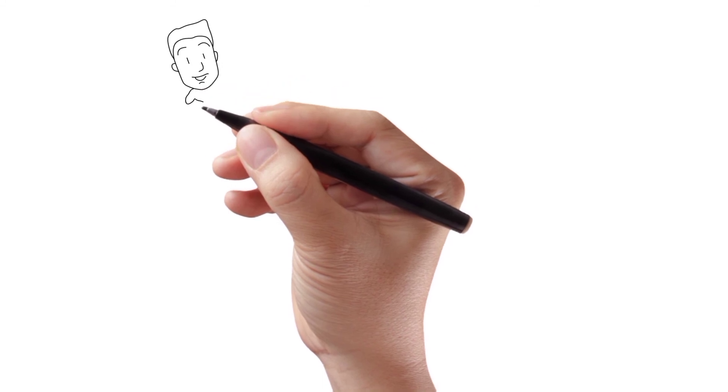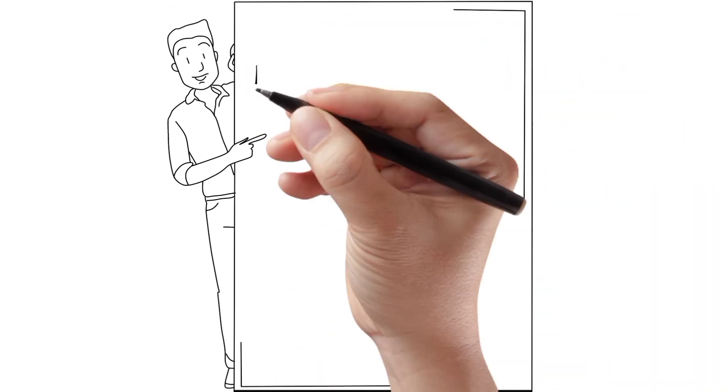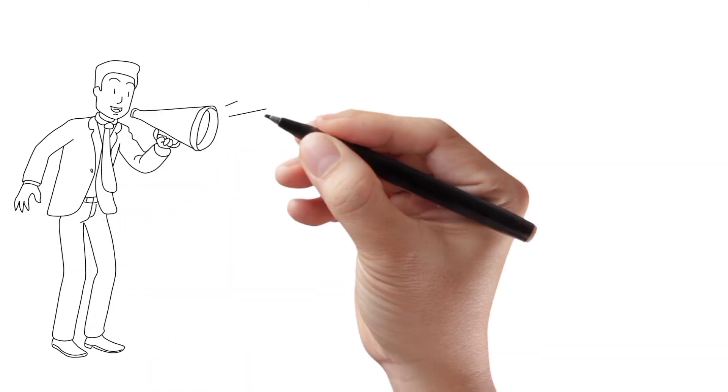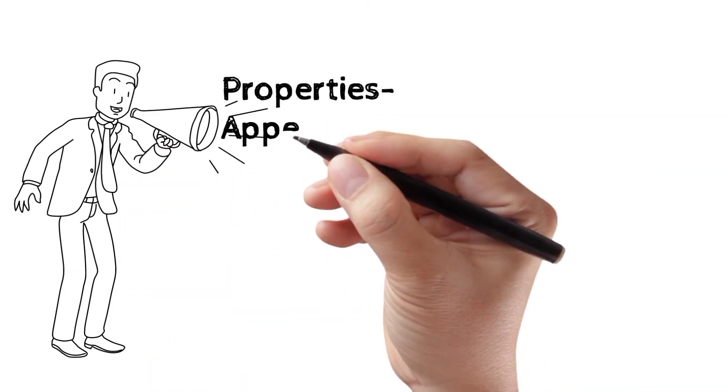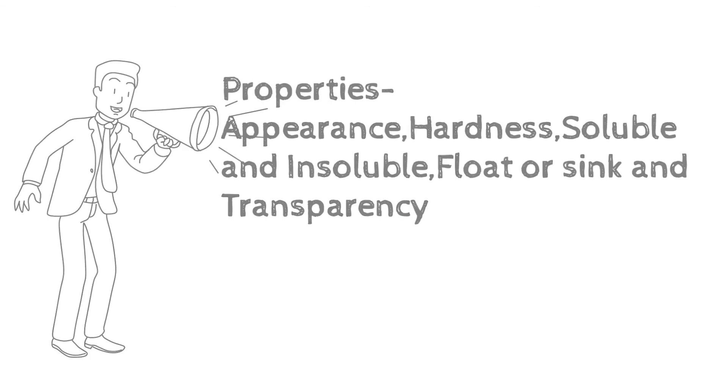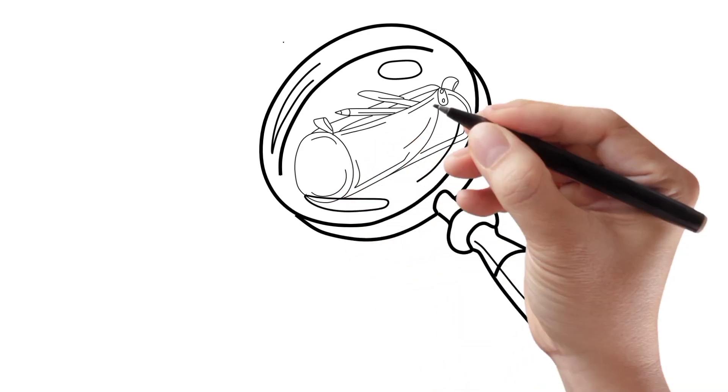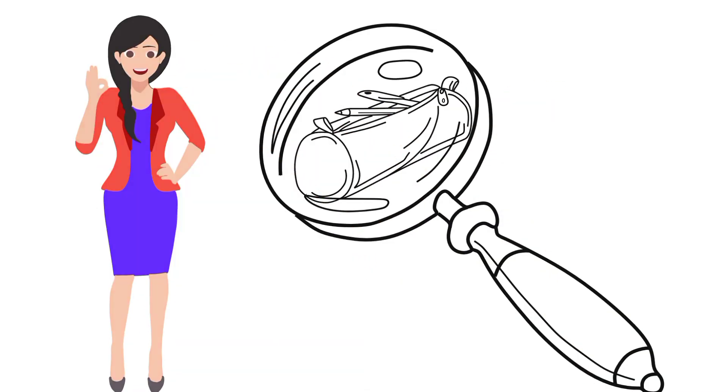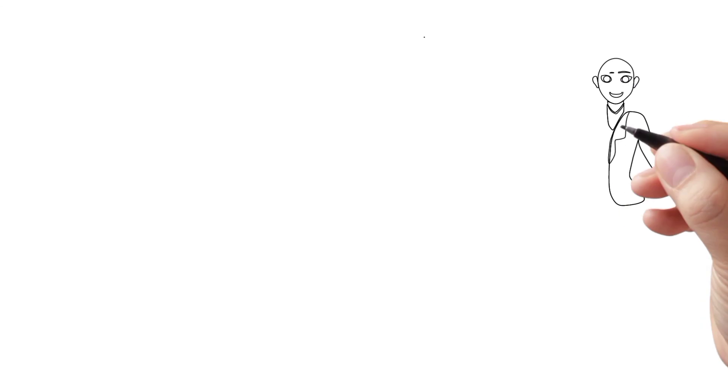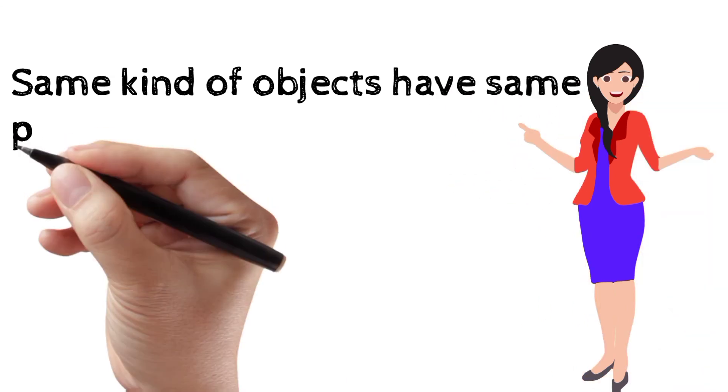Today we have understood how do we identify the objects which are made of different materials. And in this way we can categorize these objects very easily. It is very helpful to locate the objects and just for the convenience of ourselves, we do this. One more thing: the objects of same kind of materials are having almost same properties.